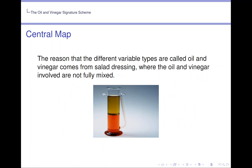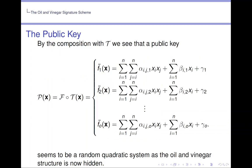The reason that the different variable types are called oil and vinegar comes from salad dressing, where the oil and vinegar involved are not fully mixed. By the composition with T we see that the public key P equals F composed with T seems to be a random quadratic system as the oil and vinegar structure is now hidden.